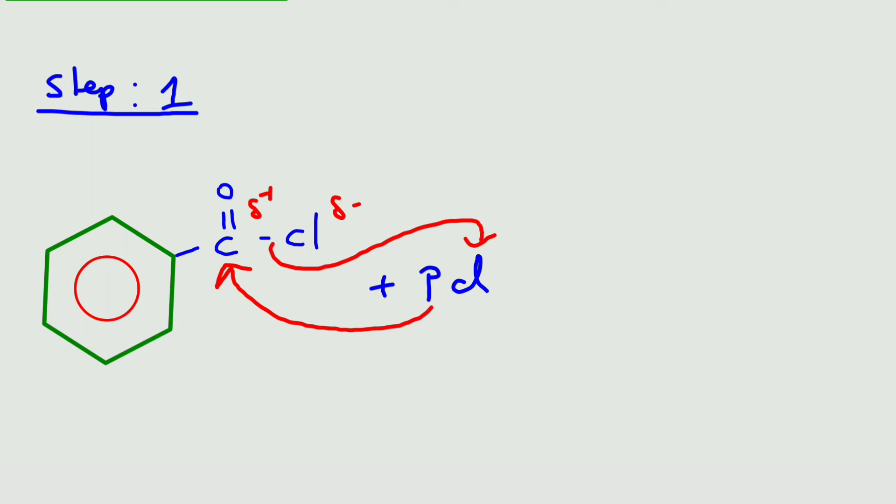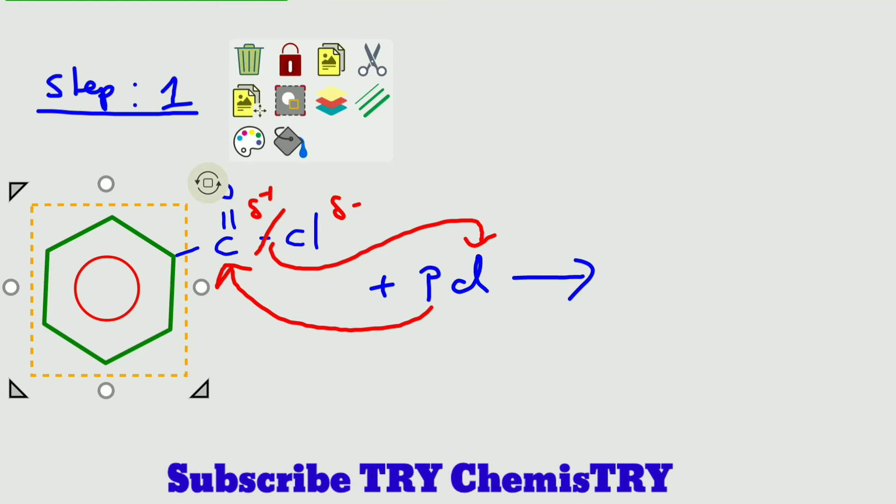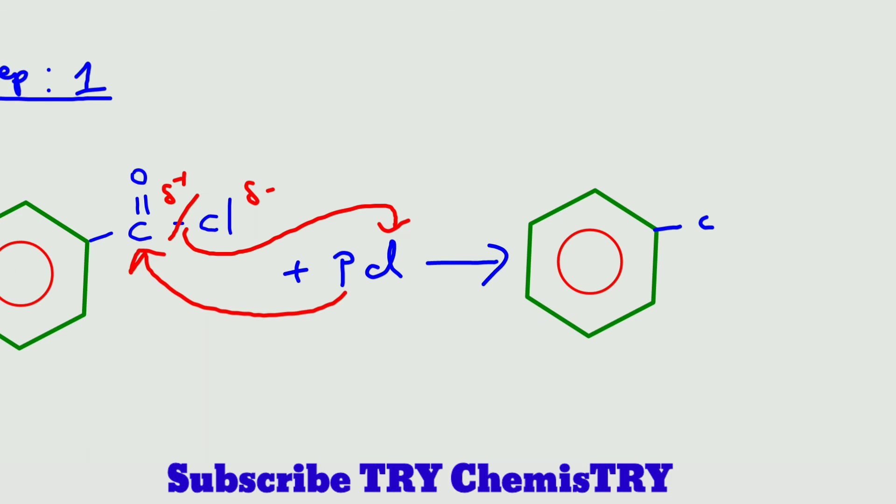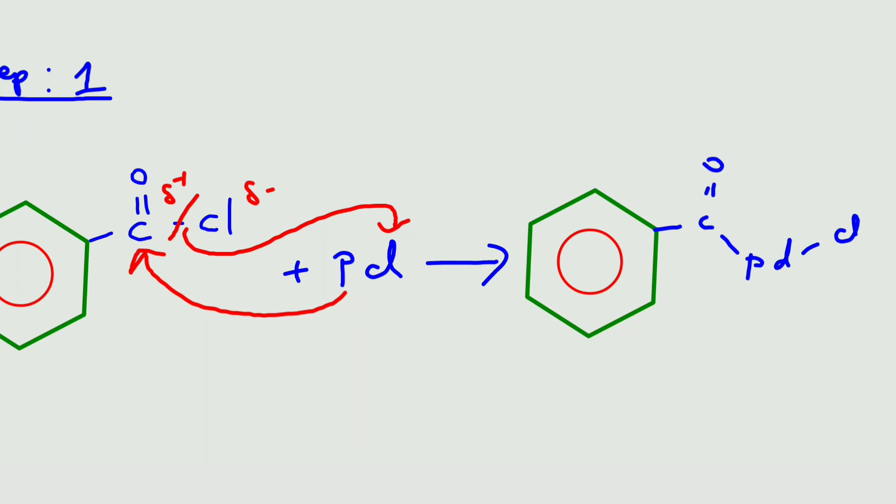We can get the product like this: here what happened is benzene ring, C double bond O, palladium and Cl. Now you come to the second step.